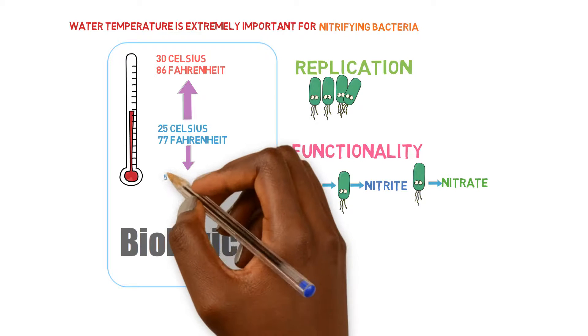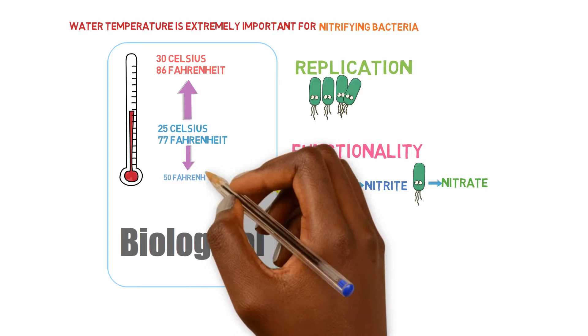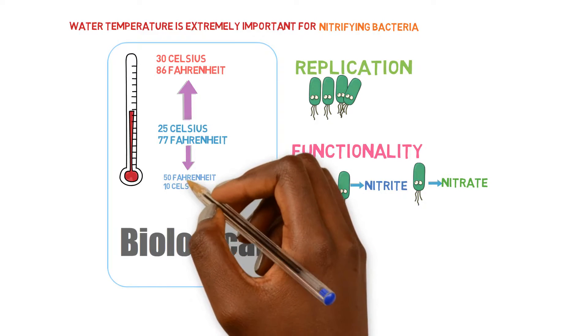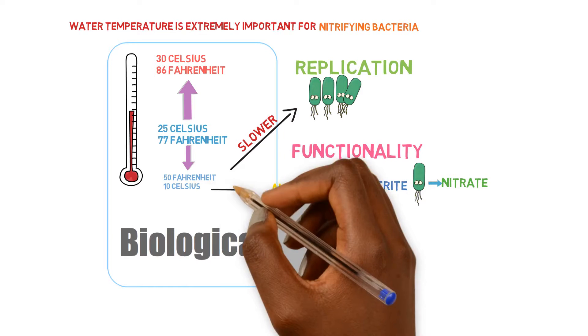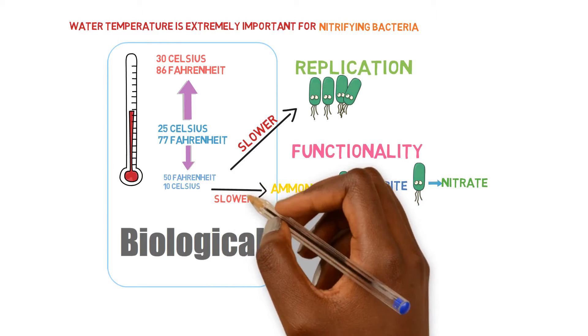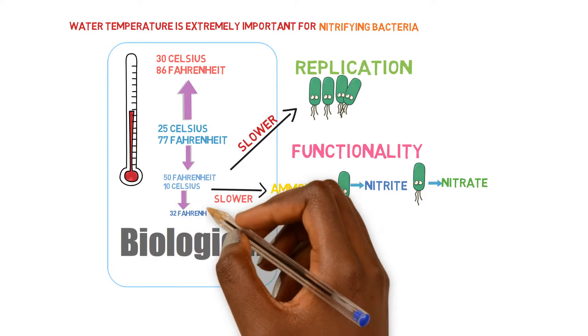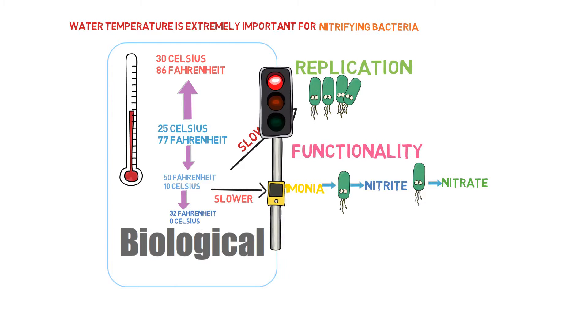Once you start dropping temperature below around 50 degrees, bacteria replication and oxidation begin to slow down tremendously. And once you get down to about 32 degrees, it pretty much comes to a halt.